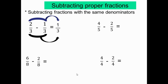Ok. Le numéro 1 de l'exercice: 4 sur 5 moins 2 sur 5. Pour ces exercices, posez la vidéo, travaillez, ensuite regardez les réponses. 4 sur 5 moins 2 sur 5 — même dénominateur. On garde le dénominateur qui est 5. On soustrait les numérateurs: 4 moins 2 égal 2, donc 2 sur 5.